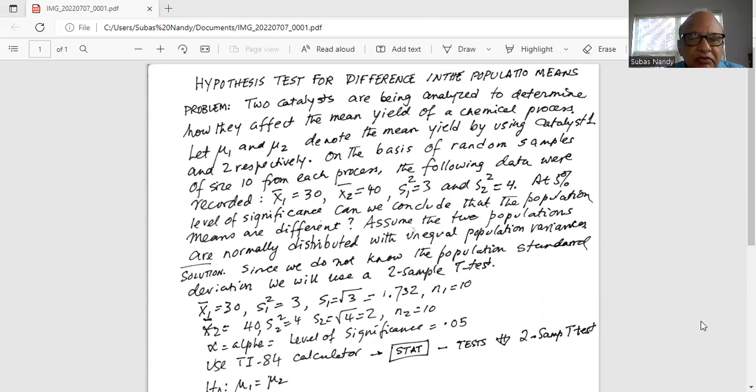At 5 percent level of significance can we conclude that the population means are different? Assume the two populations are normally distributed with unequal population variances. Solution.